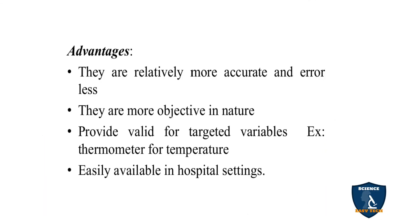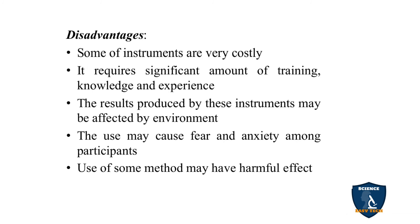The advantages of biophysiological methods: they are relatively more accurate and errorless because specialized equipment gives correct and accurate values. They are more objective in nature — results cannot be manipulated. For example, if a patient's blood sugar level is 140 mg/dL, the lab value clearly shows that; you cannot report 160. They provide valid data for targeted variables — a thermometer for temperature, a sphygmomanometer for blood pressure. They are easily available in hospital settings, both in vivo and in vitro.